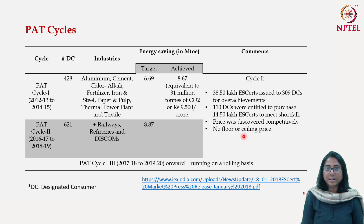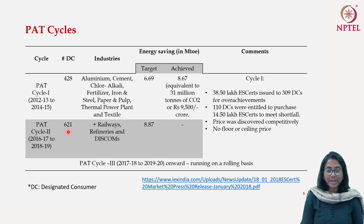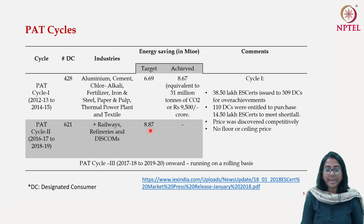After the first cycle, there was a second cycle of PAT: 2016-17 to 2018-19, another three years. Under the second cycle, there were altogether 621 designated consumers. Other than the original eight industries, three more were added: railways, refineries, and DISCOMs — the power distribution companies. The target for cycle 2 was to achieve 8.87 million tons of oil equivalent of energy saved. This data is yet to come as it has just ended.